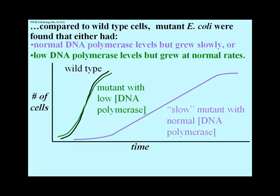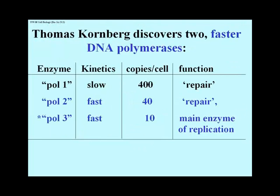The conclusion had to be that another DNA polymerase was responsible for most of the replication of DNA in the bacterium. Arthur Kornberg's son Thomas worked out the characteristics of two faster-acting DNA polymerases than the one his father had discovered. The three E. coli enzymes — Pol 1, Pol 2, and Pol 3 — are compared here. Pol 1, Father Kornberg's polymerase, was the slow-acting one at 400 copies per cell, with a function in DNA replication related to a repair feature. DNA polymerase 2 was much faster-acting but present at a tenth the copies per cell, also involved in repair mechanisms. DNA polymerase 3 turns out to be the main polymerase of replication in E. coli.